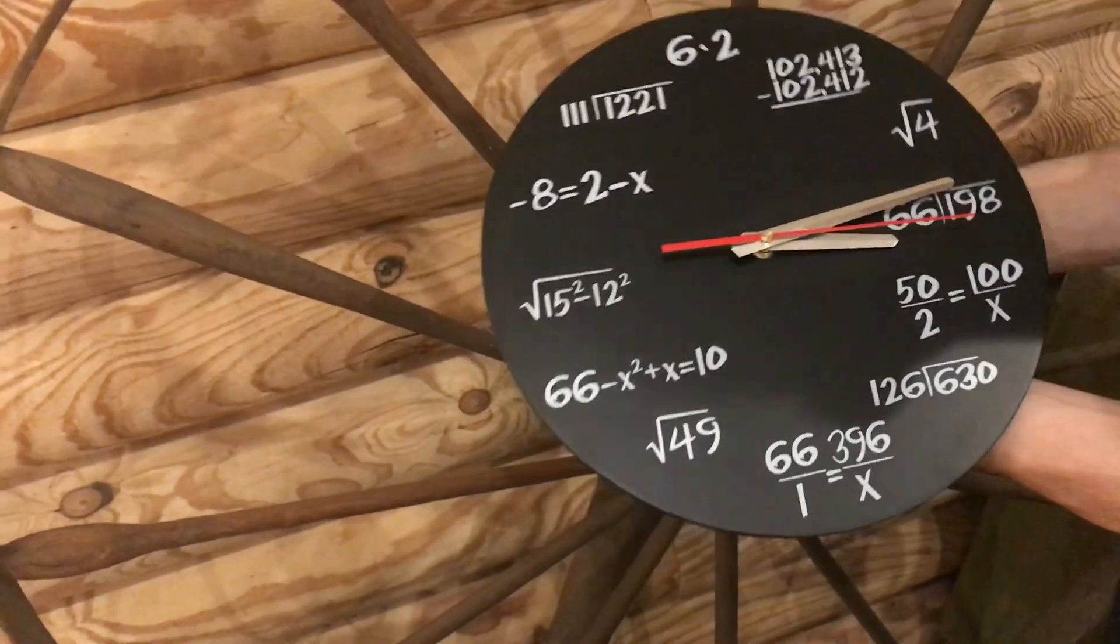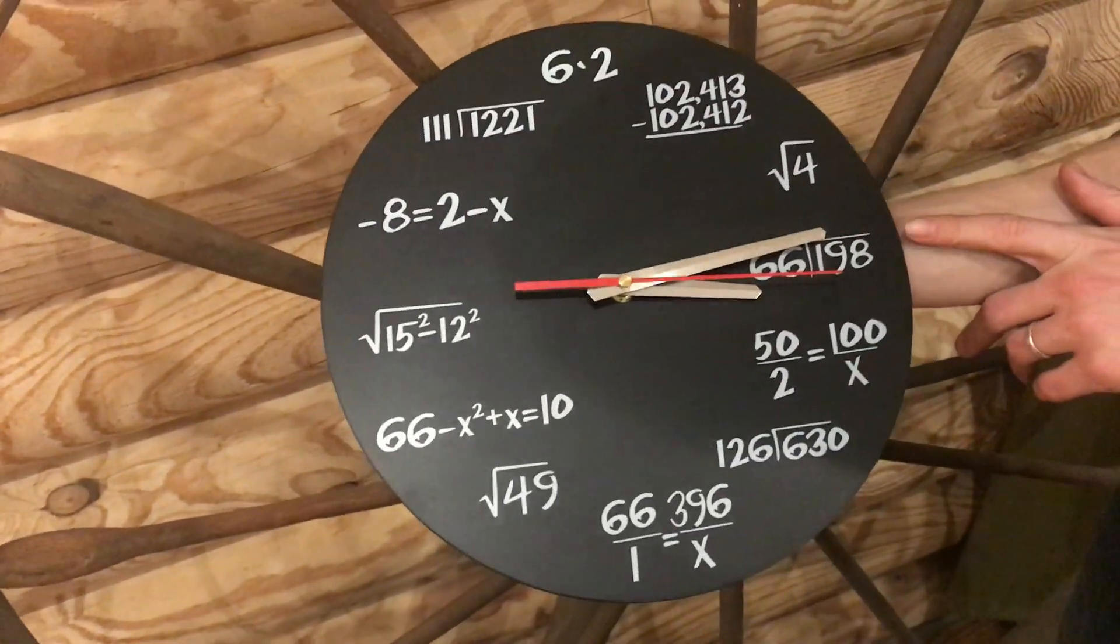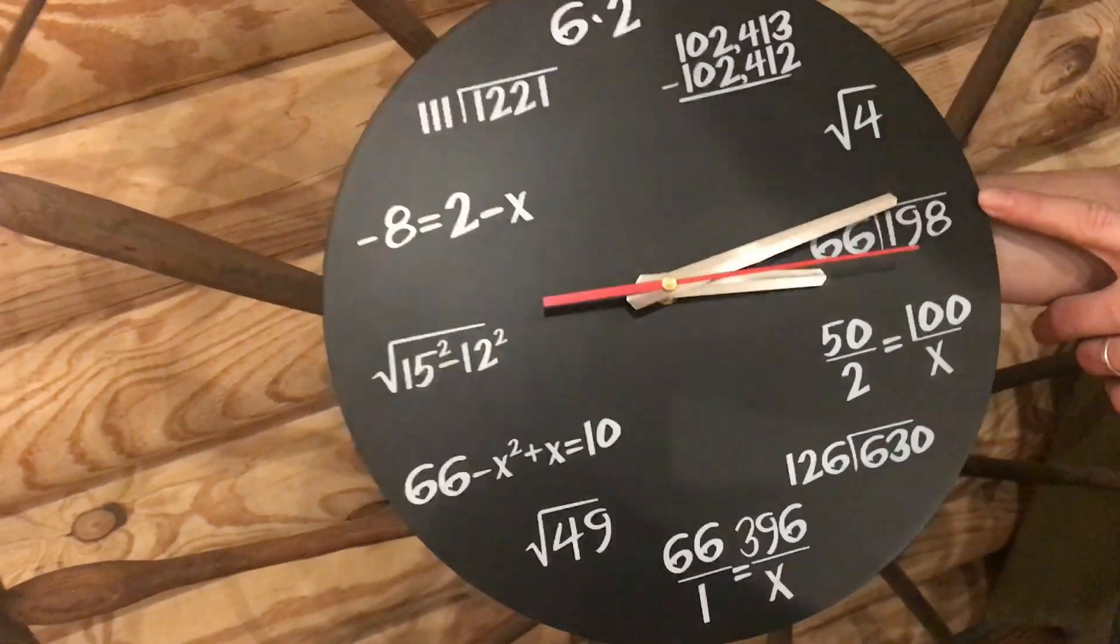So we've got quite a lot of math going on in this clock, and actually, if you didn't notice, the time set on the clock is 3.14 and 15 seconds, which is significant because Pi is 3.1415.